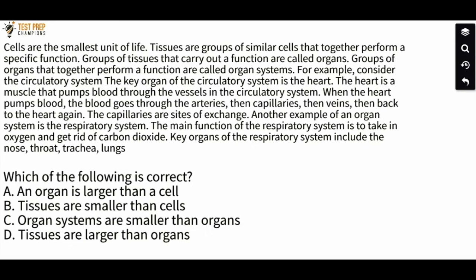For example, consider the circulatory system. The key organ of the circulatory system is the heart. The heart is a muscle that pumps blood through the vessels in the circulatory system. When the heart pumps blood, the blood goes through the arteries, then capillaries, then veins, then back to the heart again. The capillaries are sites of exchange.